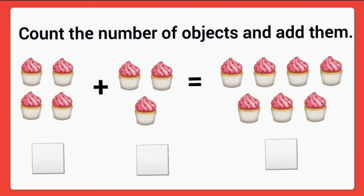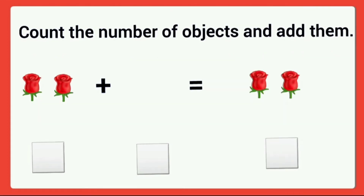Next, how many cakes are in the first group? One, two, three, four. Write four in the given box. Then second group, how many cakes? One, two, three. Write three in the given box. Then total number of cakes are one, two, three, four, five, six, seven. Four plus three is equal to seven.